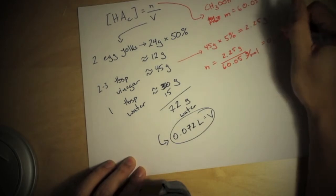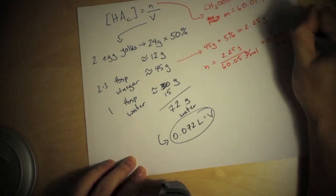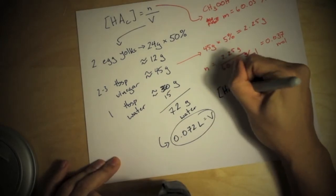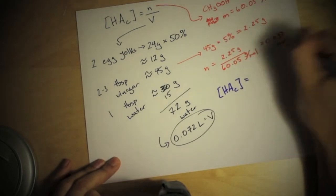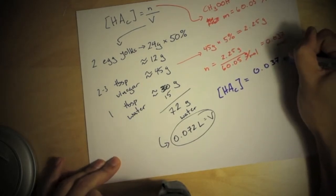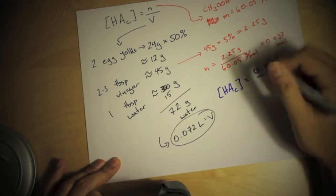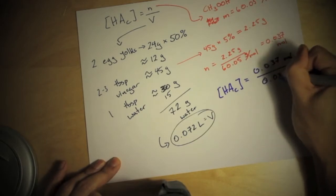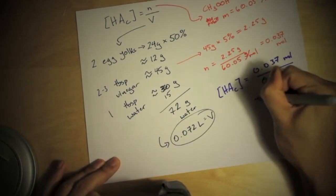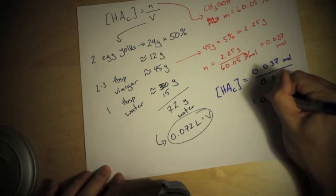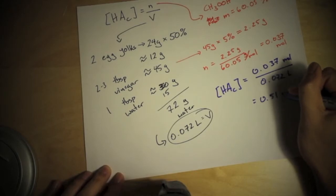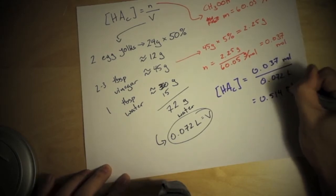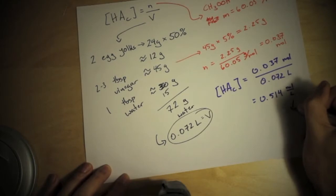So that means that the concentration of my acetic acid in this case is going to be 0.037 moles divided by 0.072 liters. Push the buttons on your thing that makes the things go and you get 0.51-ish, I'll carry one more digit, 0.514 moles per liter, which is also known as molar concentration.